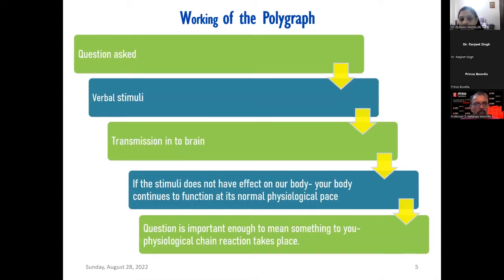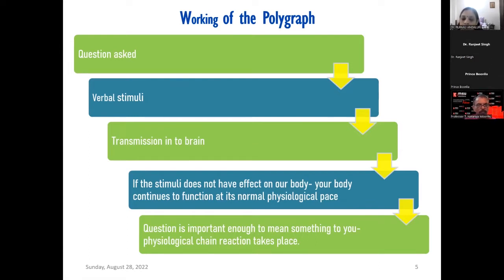The working of polygraph: we ask a question, which is a verbal stimulus that enters the brain. If the question has no effect — if the subject is truthful and knows he won't be punished — he has no emotional reaction and the body continues its normal physiological pace. But if the question is important enough that the person knows he'll get caught or punished for lying, then the physiological chain reaction takes place.